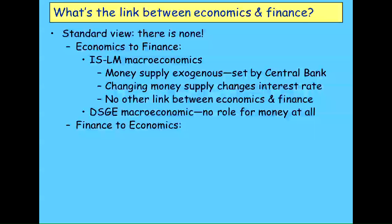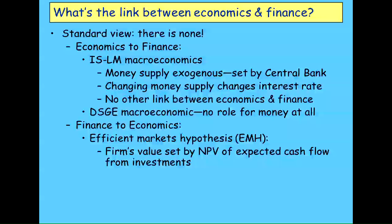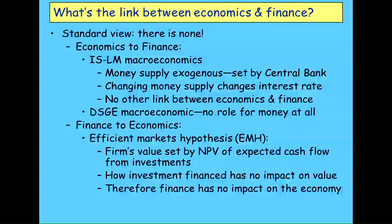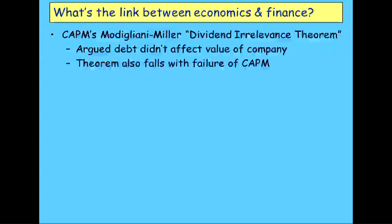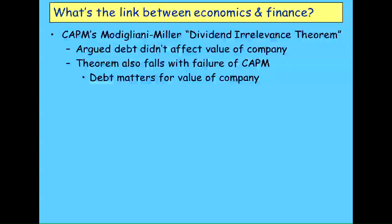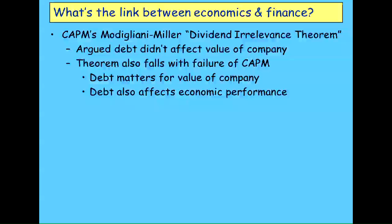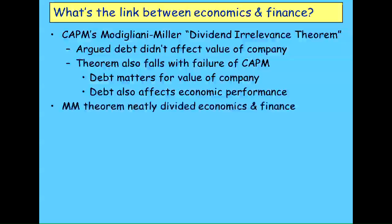Looking from finance to economics, the efficient markets hypothesis tells you that the value of a firm is set by the net present value of the expected cash flows from its investments — it has nothing to do with whether the firm is financed 100% by equity or 100% by debt. Finance has no impact on the economy. The most extreme element was the Modigliani-Miller dividends irrelevance theorem, which said the amount of debt didn't matter because if a firm has lots of debt, people can buy it with straight cash; if it has no debt, people can buy it with gearing. Therefore the value of the firm is unaffected by the amount of debt it has. But that theorem fails when you see empirically that CAPM simply doesn't work — so ipso facto, debt does matter for the value of a company, and debt might also affect economic performance. You can't knock debt and how firms are financed out of economics anymore, and you can't have that neat division between economics and finance.